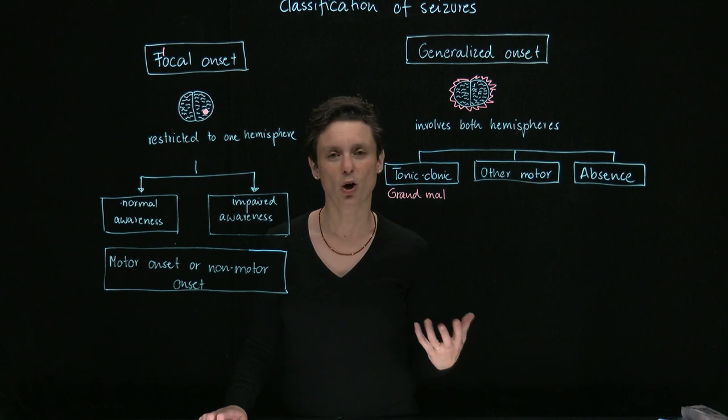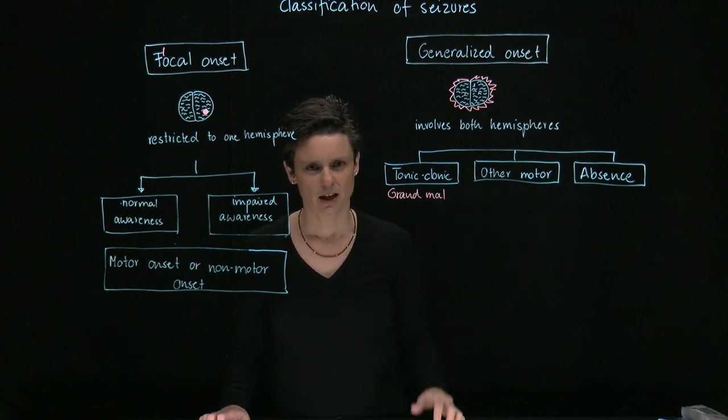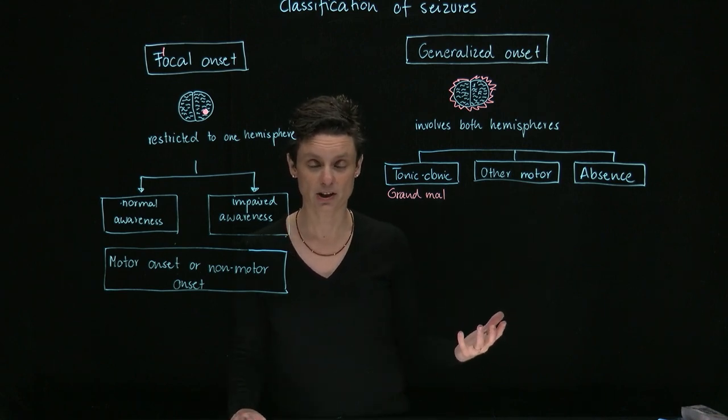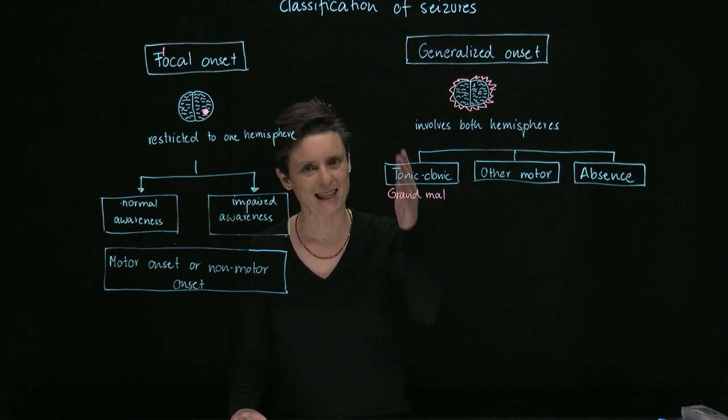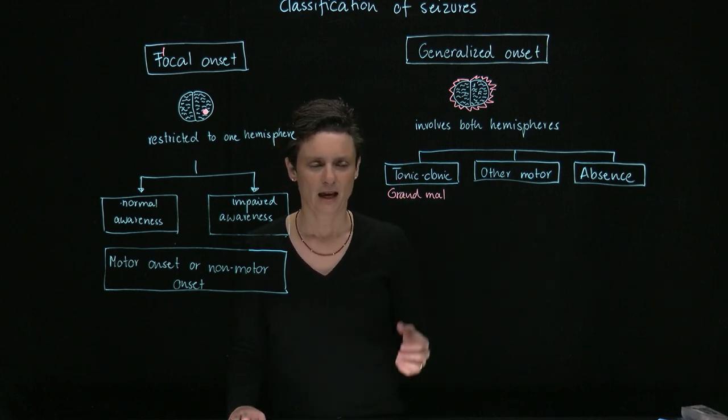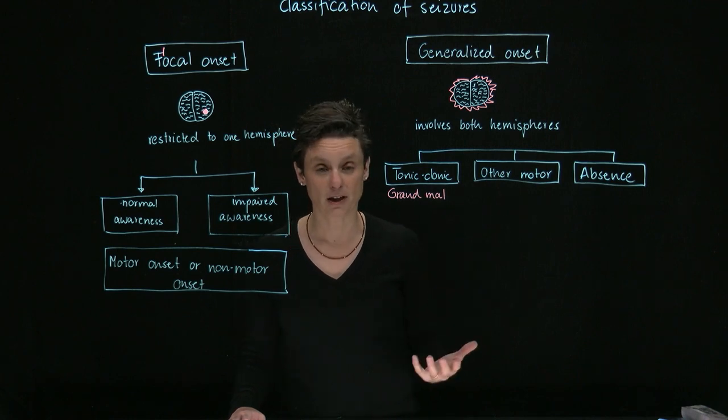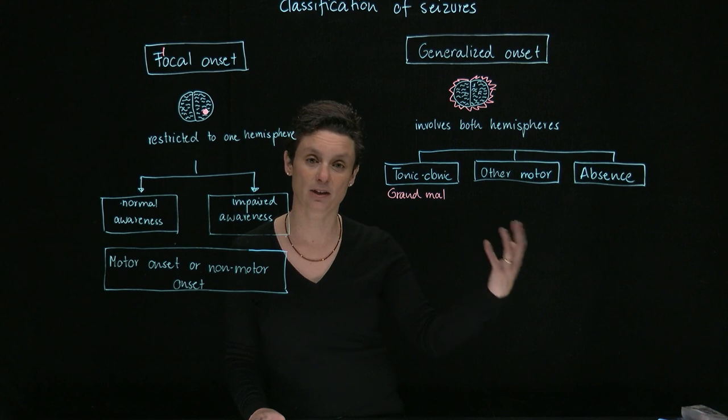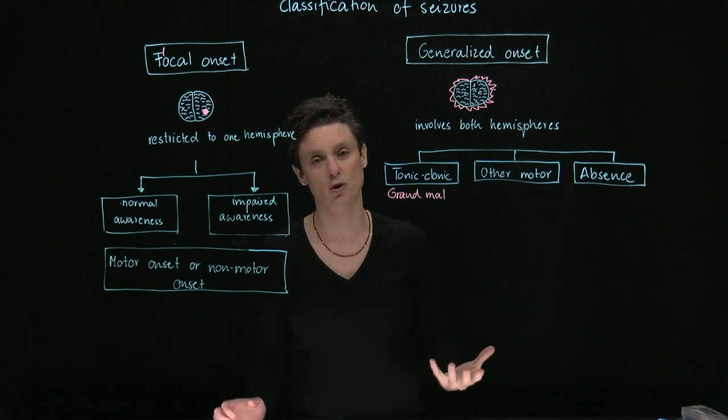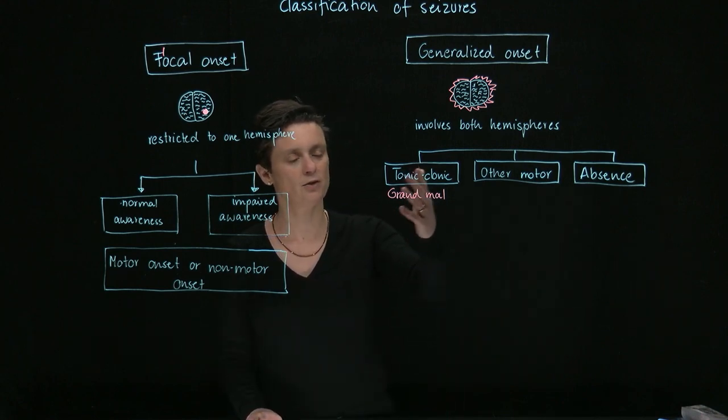So how does a tonic-clonic seizure present? So normally the patient loses consciousness and falls to the ground, and the whole body stiffens, and that's a tonic phase. Thereafter comes a clonic phase, and these are alterations between muscle contractions and relaxations. So this is this jerking movement. So tonic-clonic.